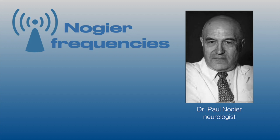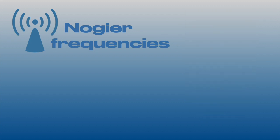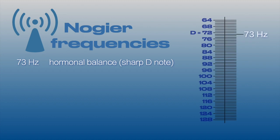These seven frequencies work as a form of energy medicine. The first resonant body frequency is 73 Hz, the microtone following the D note at 72 Hz.